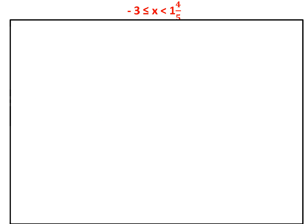Now let us find the solution sets for this simplified inequation. For x belongs to N, we need all natural numbers between minus 3 and 1 and 4 upon 5. The only natural number in this range is 1. Hence, our solution set is {1}, and we represent 1 on the number line.